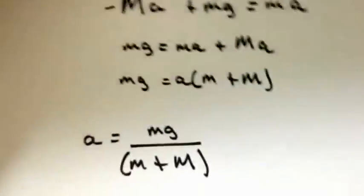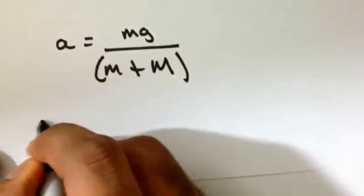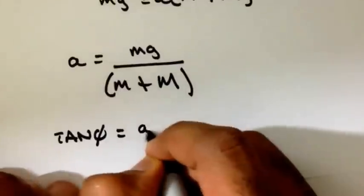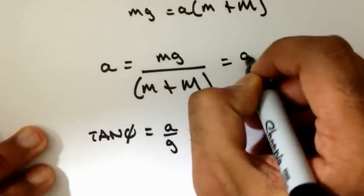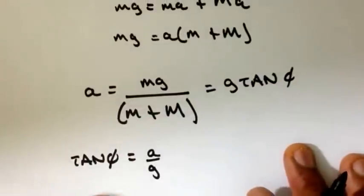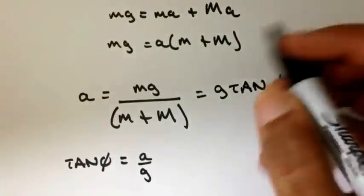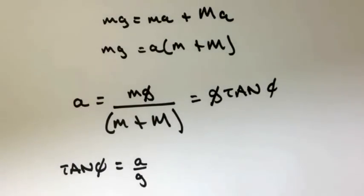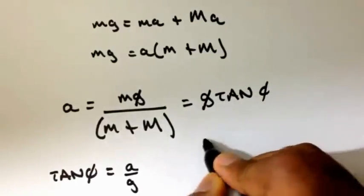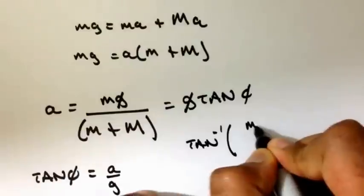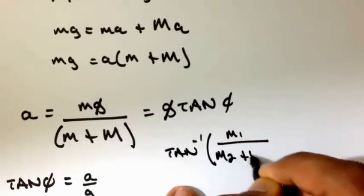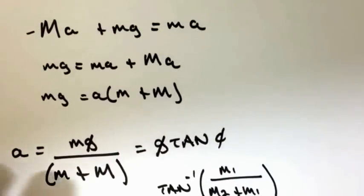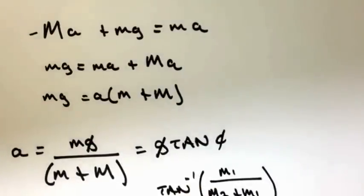We found that tan(theta) = A/g, which means A = g · tan(theta). Substituting A = mG/(m+M) and canceling g from both sides, we can solve for theta by taking the arctangent of M1 divided by (M2 + M1). This arctangent gives the angle theta. We will proceed with part C in the next video.